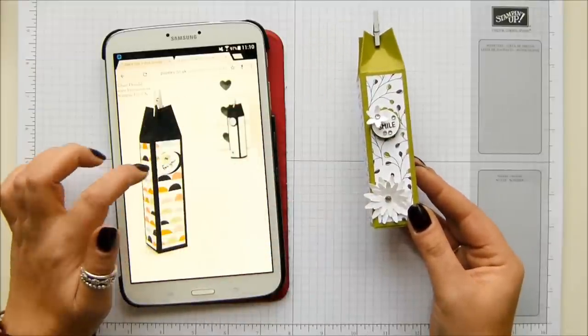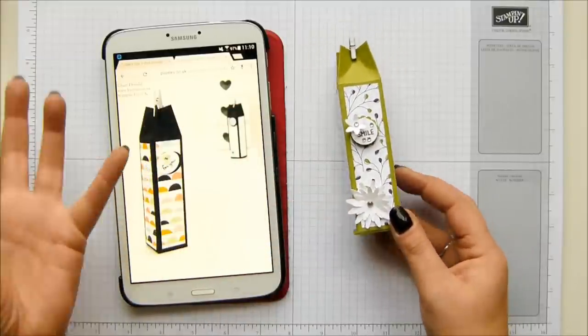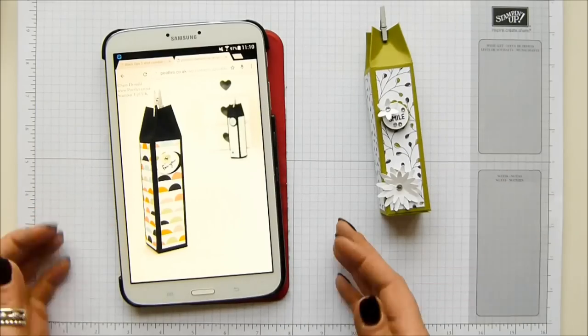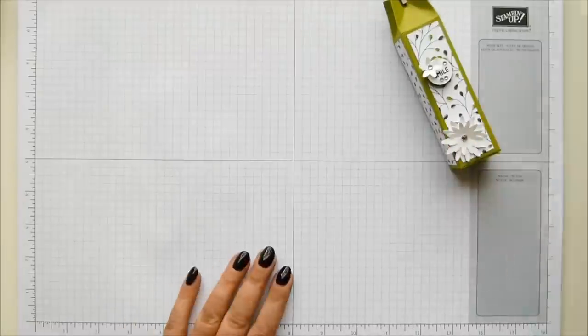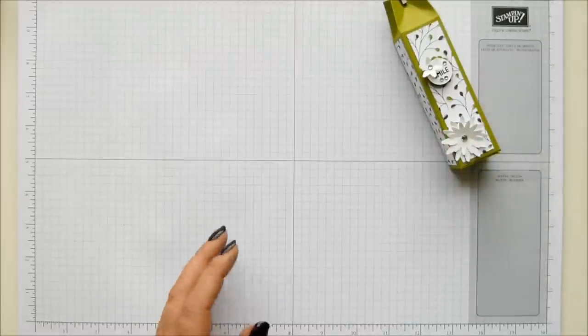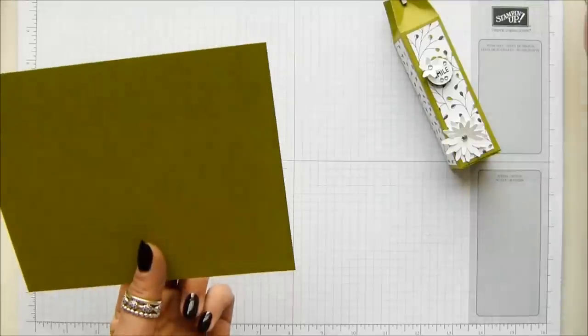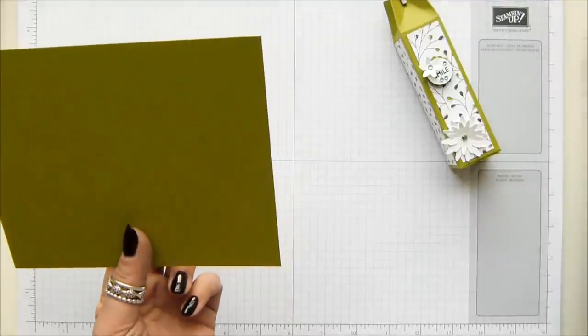I've modernized it very slightly. We don't have that oval punch anymore, nor do we have that flower, but it's essentially the same. Let me show you how to make it. You can get two of these from a sheet of cardstock.